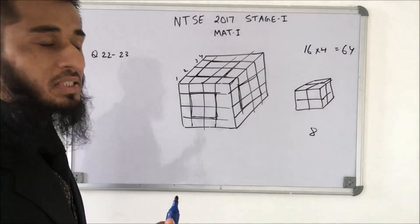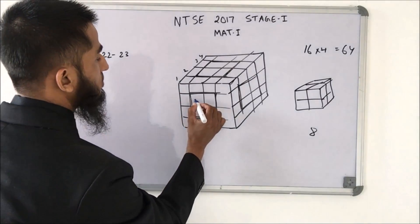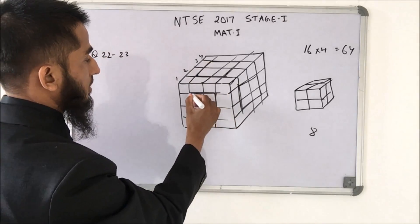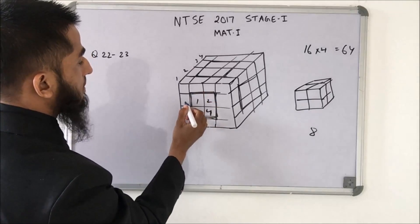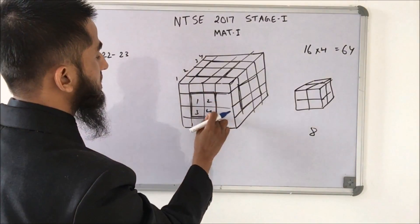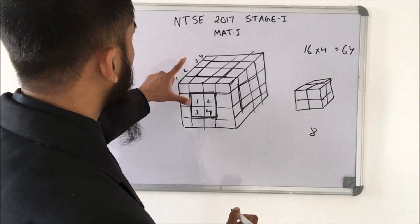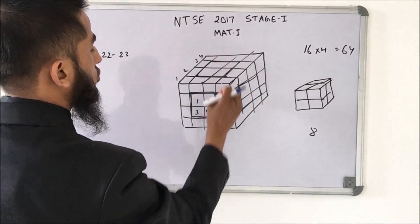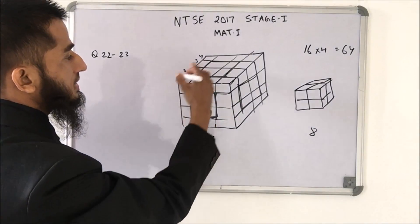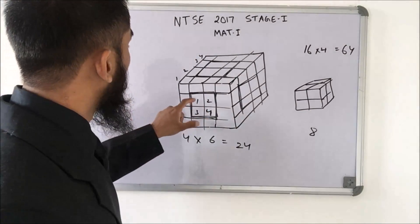Question number 23 asks how many cubes have only one face painted. These are the cubes on the face, not on the sides or edges (edge cubes have 2 faces painted). A cube has 6 faces total, and each face has 4 such cubes, so 4 × 6 = 24 cubes have only one face painted.